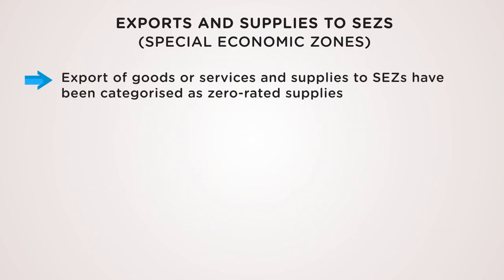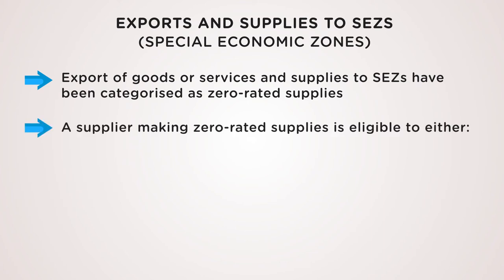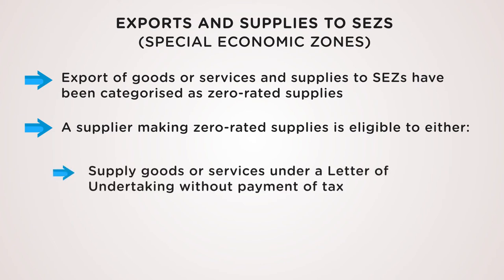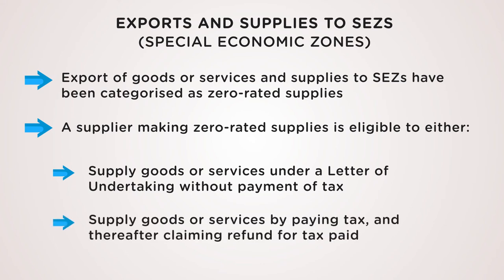In terms of exports and supplies to special economic zones, these supplies have been categorized as zero-rated supplies. A supplier making zero-rated supplies is eligible to either supply goods or services under a letter of undertaking without the payment of tax, or to supply goods or services by paying tax and thereafter claiming refund for the tax paid.